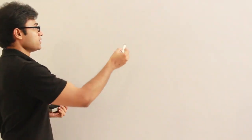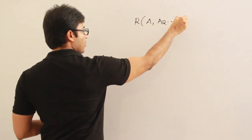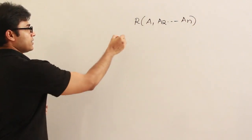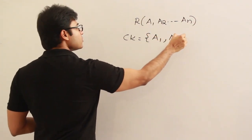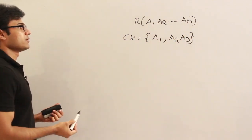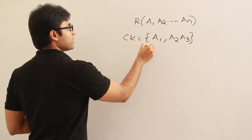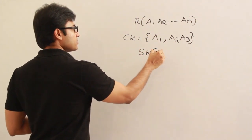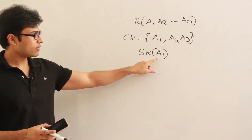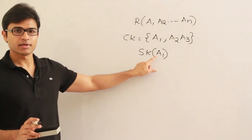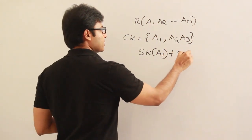Let's extend the question a bit. The number of attributes in the relation are a1, a2, ... an, and there are two candidate keys: one candidate key is a1, and the other candidate key is {a2, a3}. To count super keys, find all super keys possible because of a1 — meaning a1 is definitely included, and a2 and a3 will also be included.